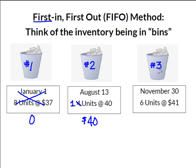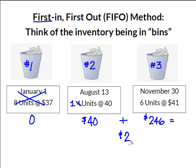We didn't sell enough to have to go all the way to bin 3, so I have all six units at $41 remaining. Six times $41 gives me $246. Those are my seven remaining units, and adding what's left in bin 2 plus what's left in bin 3 gives me an ending inventory value of $286.